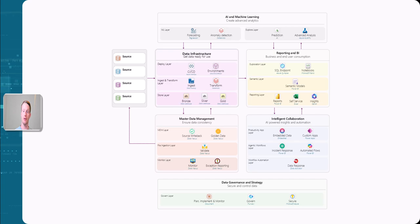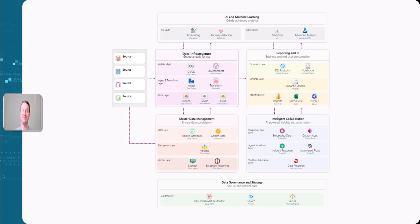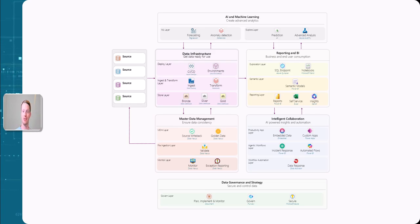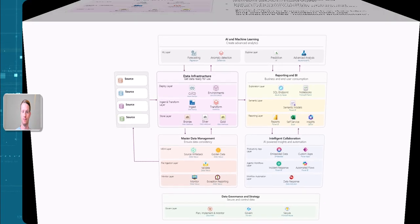We're going to go through six different components within a data platform. This is very typical and these are what we recommend when building a modern data platform. We're going to go one by one through each of these components just to understand them a little bit more.